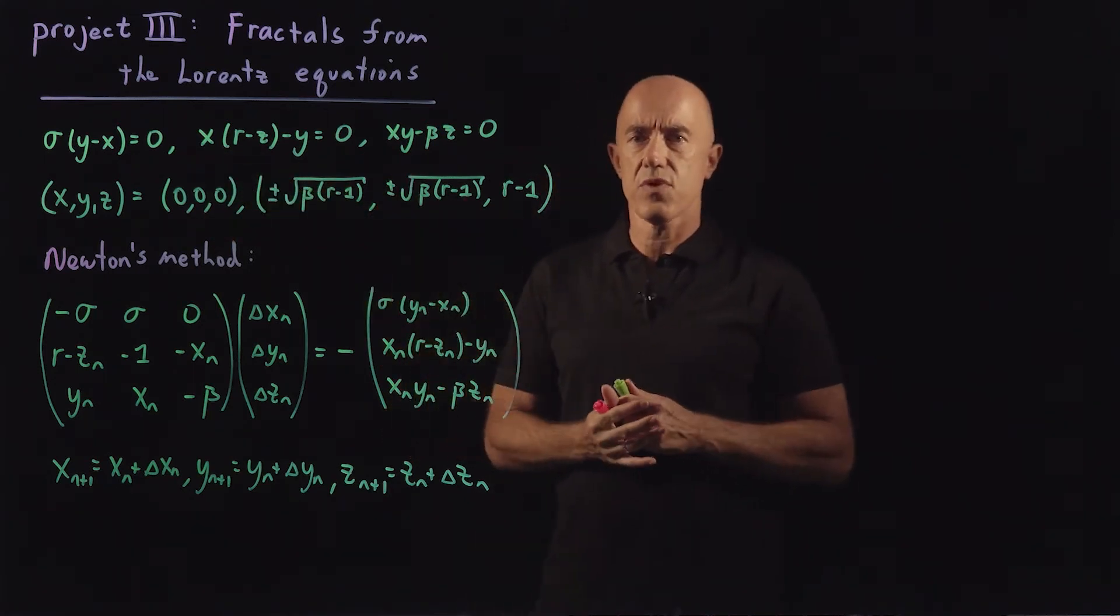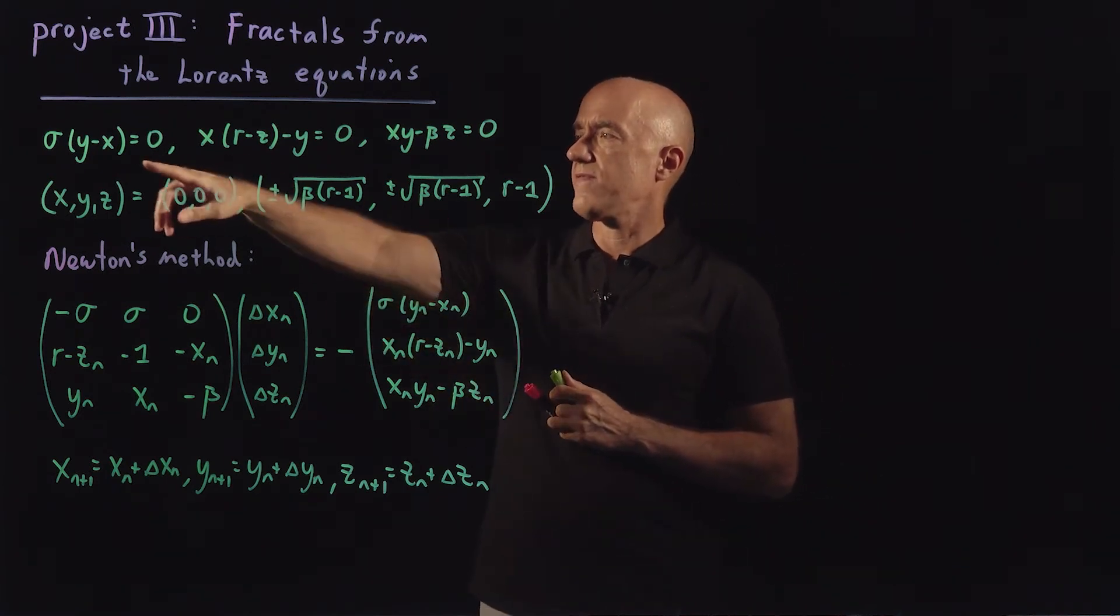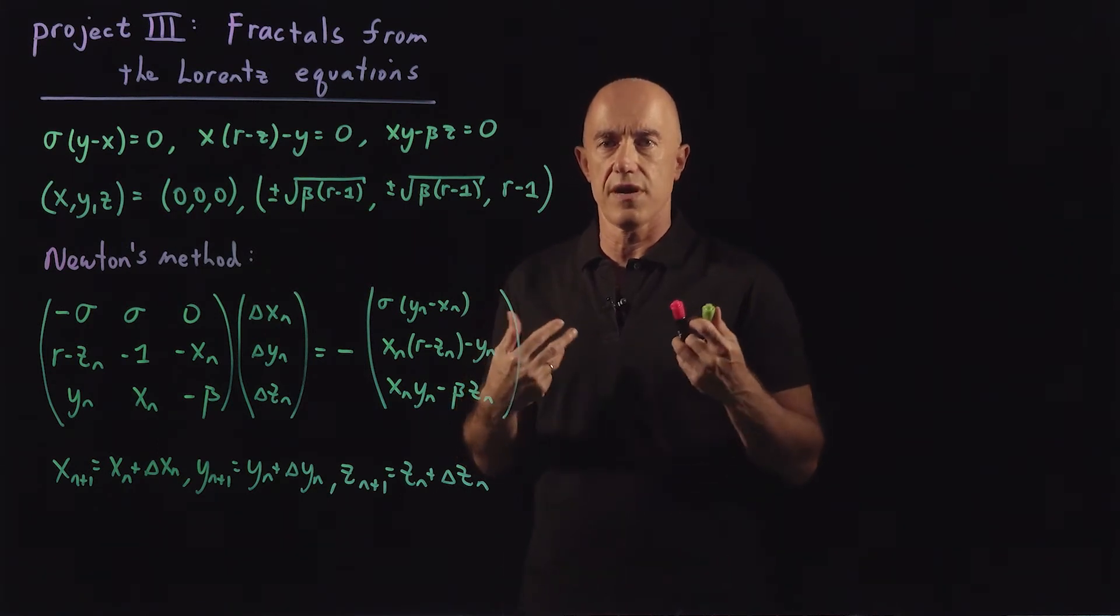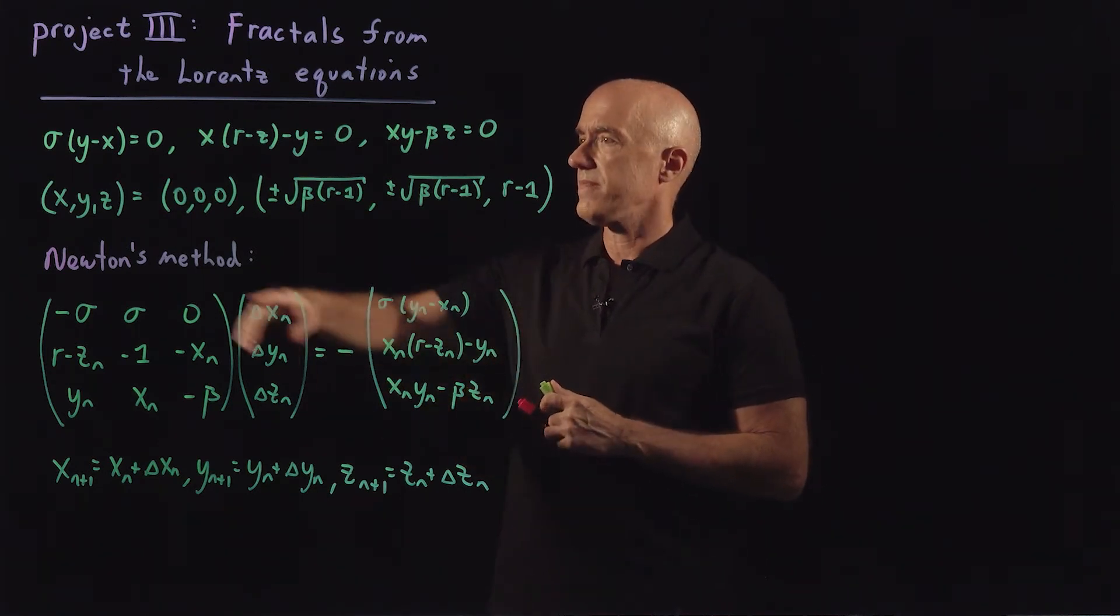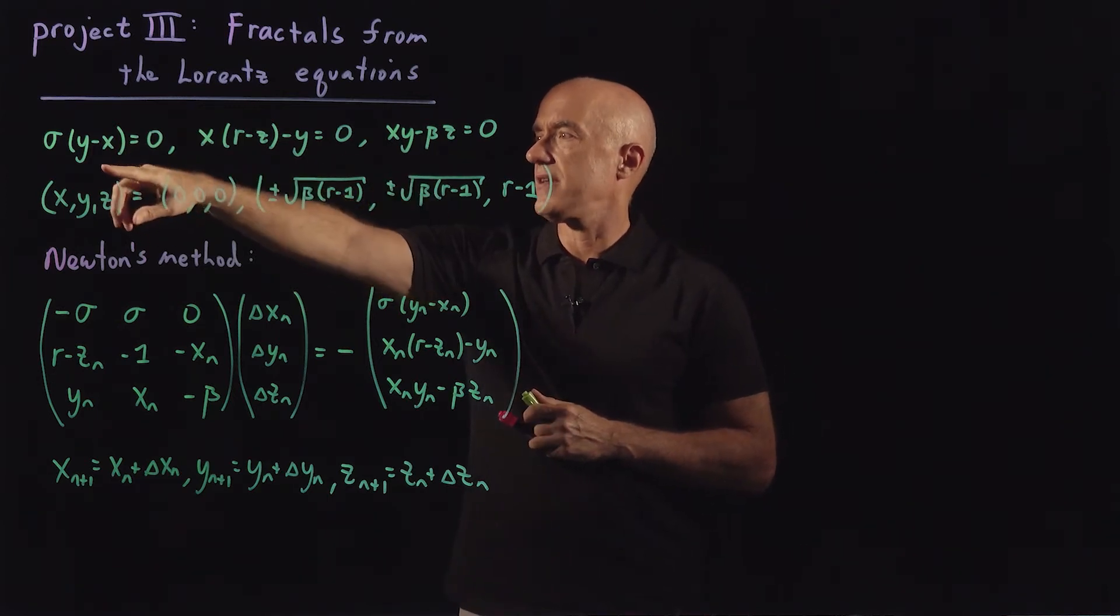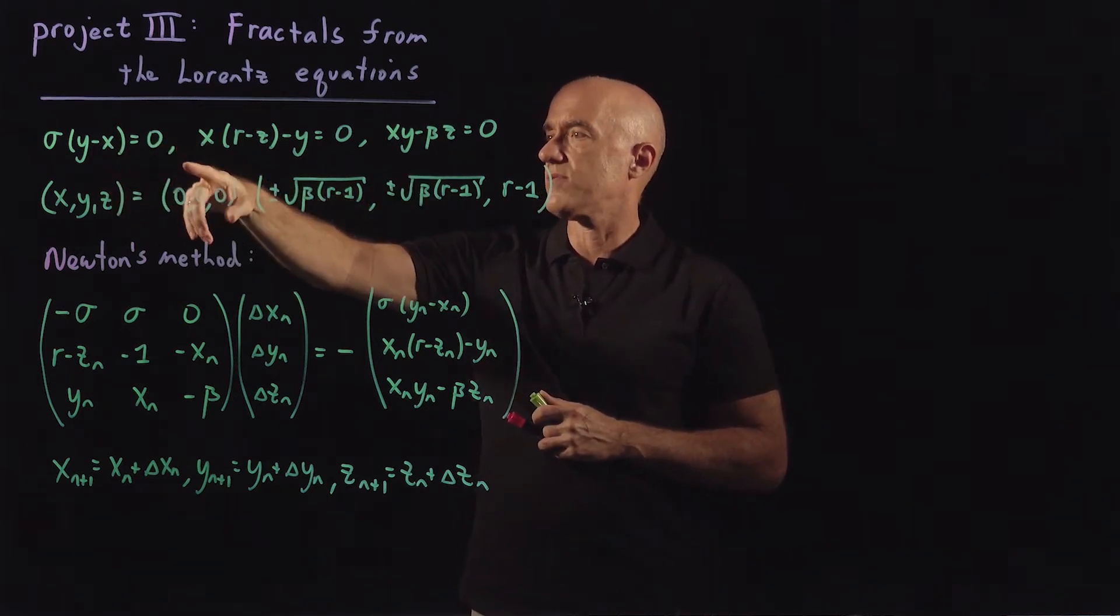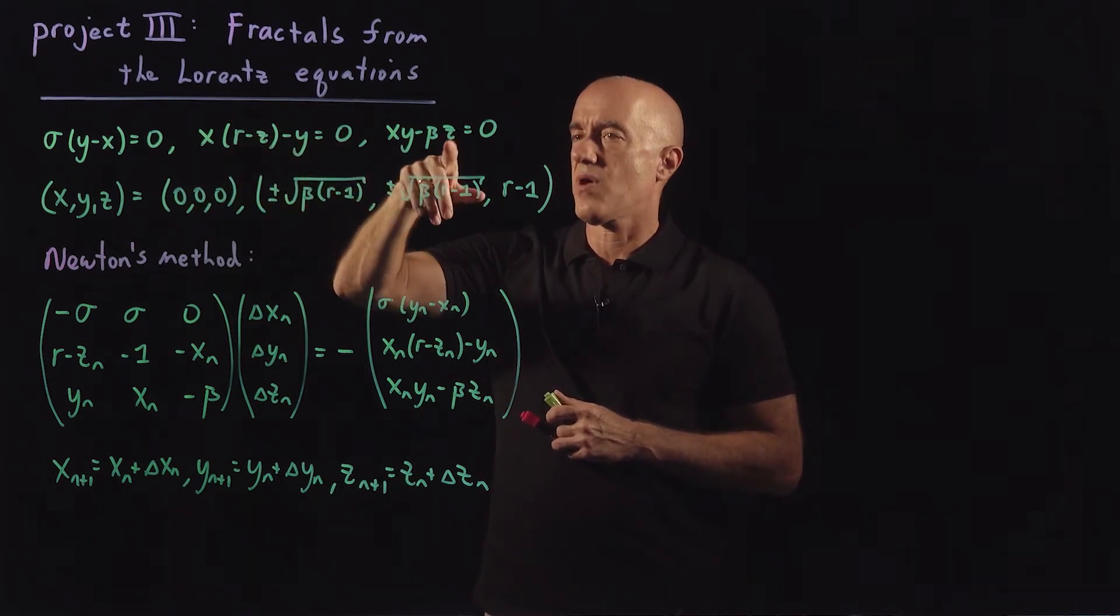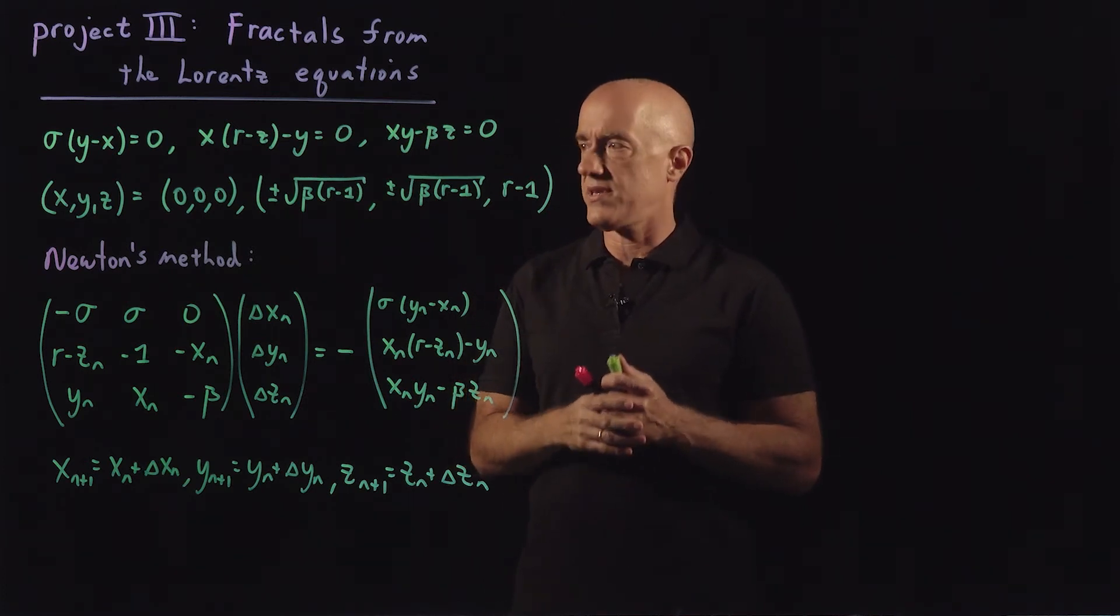So here's what it looks like. We're looking for the fixed points of the Lorentz equations. You already wrote some code to find fixed points numerically. These are the three equations given in this first line: sigma y minus x equals zero, x times r minus z minus y equals zero, and xy minus beta z equals zero.